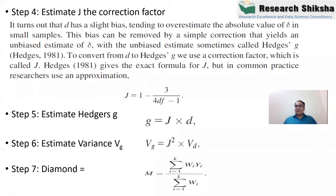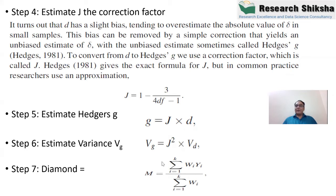Hedges' g is the true unbiased value of the difference between the two groups. We calculate the correction factor j = 1 - (3 / (4*df - 1)), which is based on degrees of freedom. Then g = j × Cohen's d. This g is the effect size for that study. From there we calculate the variance — if sample size is low, variance is high; if sample size is high, variance is low. The weight is calculated as weight = 1 / variance(g). If variance is very high, we provide less weight.